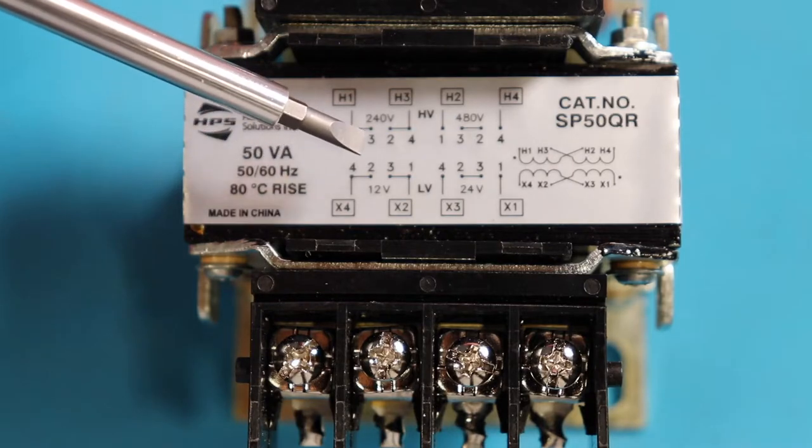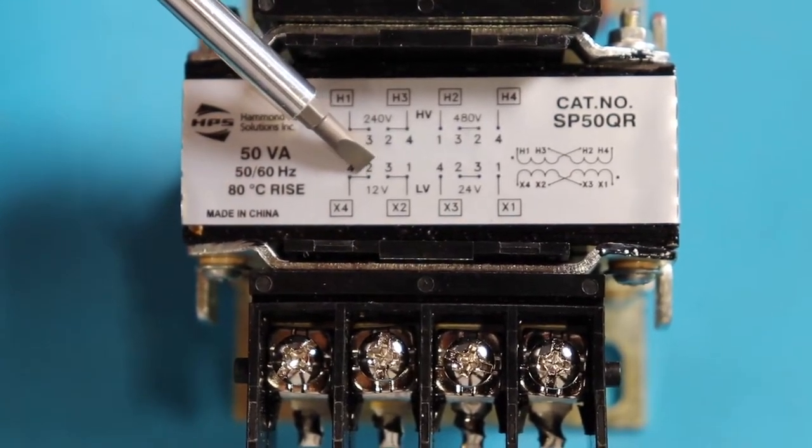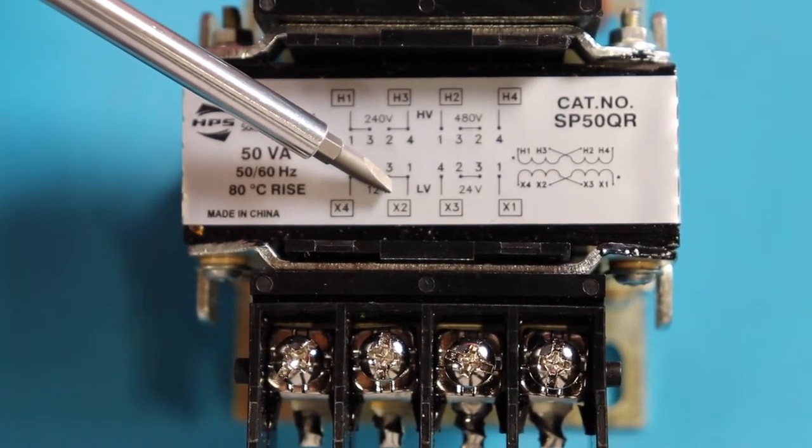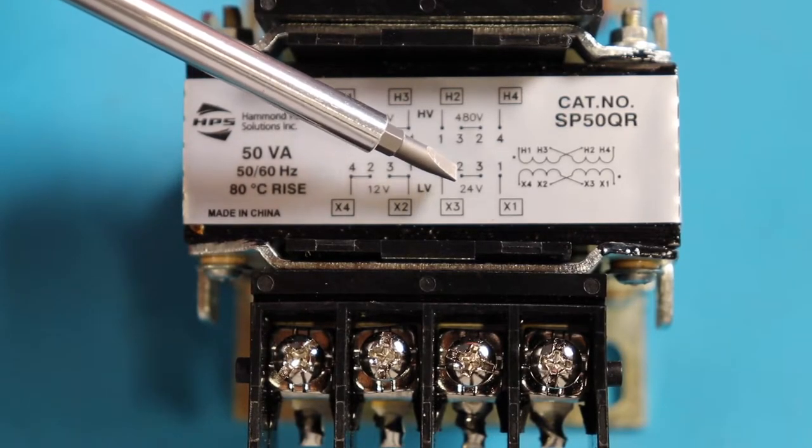Now when it comes to our secondary side, it's pretty much the same thing as the primary side. To get 12 volts, we got to put our jumpers in between 4 and 2 and 3 and 1. And to get our 24 volts, we got to put our jumpers in between 2 and 3.